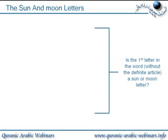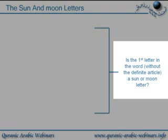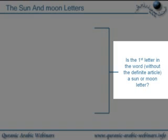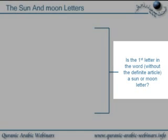Now we get into why we need to know these sun and moon letters. We're going to ask ourselves a question, and this is for the noun: is the first letter in the word — we're really talking about nouns here — a sun or moon letter? We look at the word without the definite article added to it and ask: is the first letter a sun or moon letter?